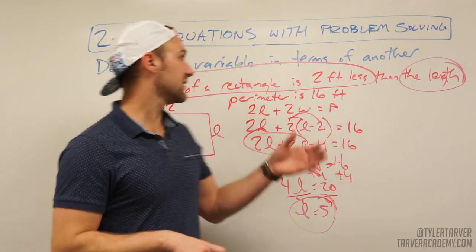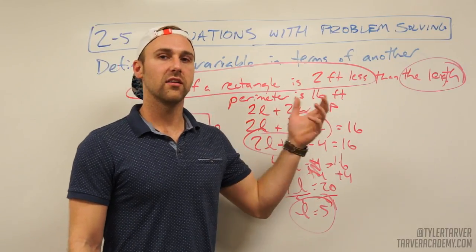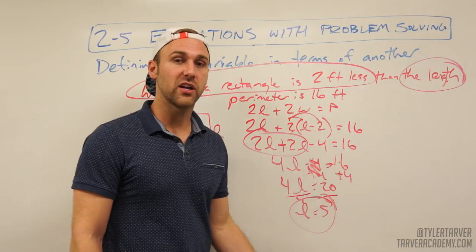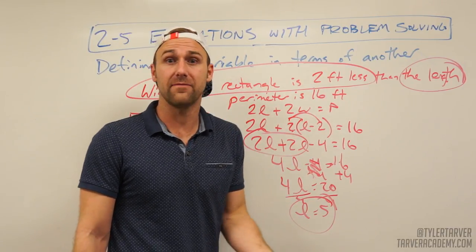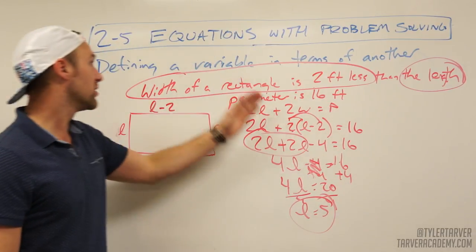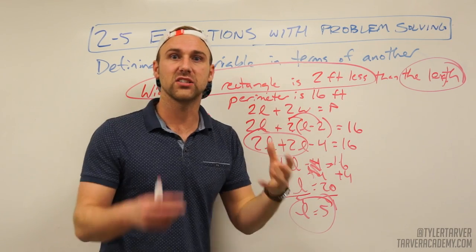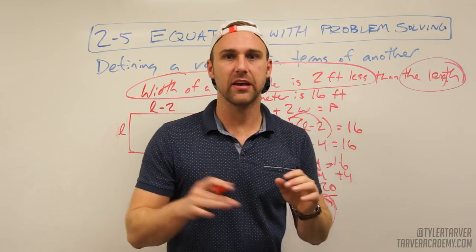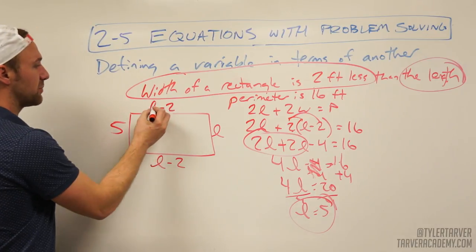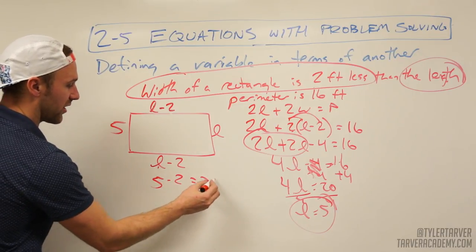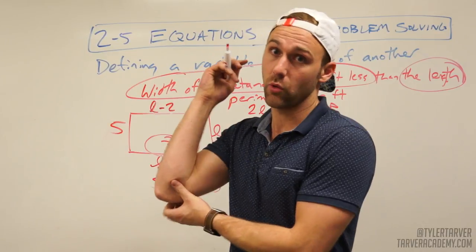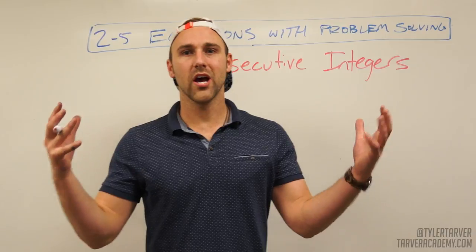Now you're probably not done. On the test, they're going to ask you for the width or both dimensions — five is likely one of the answer choices, and it's a trap. The most-used trick on math standardized tests is to make you plug your answer back in. My length is 5, and they're probably going to ask for the width, so plug in: L minus 2 equals 5 minus 2, which is 3. My width is 3. Always reread the last sentence of the question to see what they actually want.